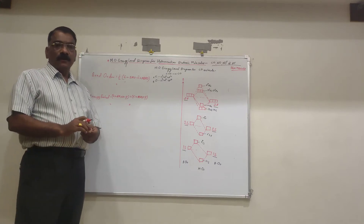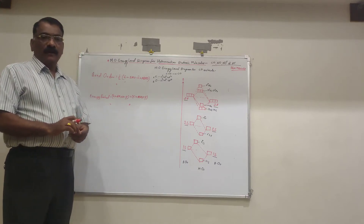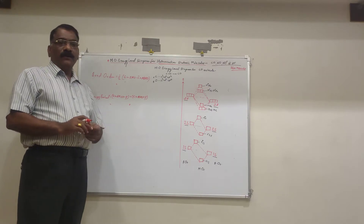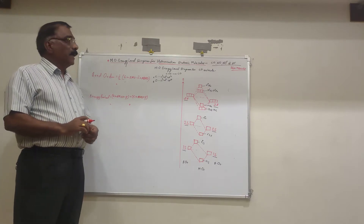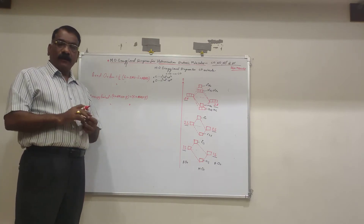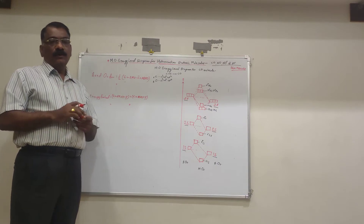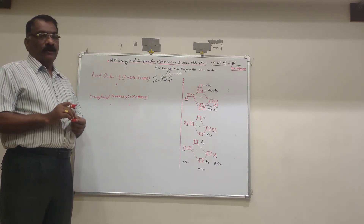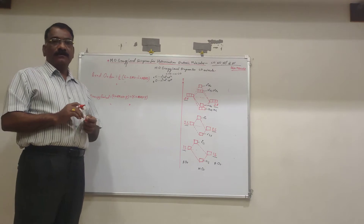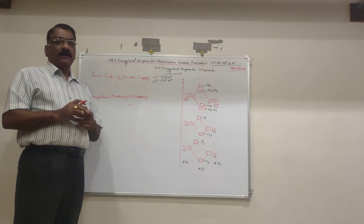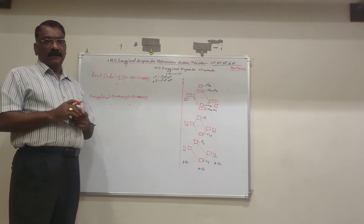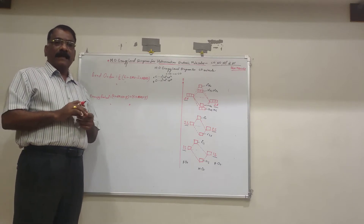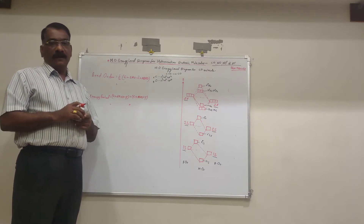Good morning students. Today we are going to see the energy level diagram for heteronuclear diatomic molecules. Up till now we have seen homonuclear diatomic molecules, which means atoms of the same element. Heteronuclear diatomic means atoms of different elements.